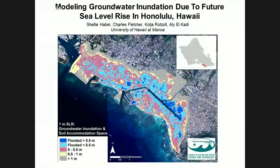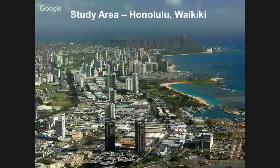Now for something a little bit different. Today I'm going to be talking about our hydrologic flow model that models the narrowing of the space between the surface and groundwater as sea level rises, as well as what areas will experience groundwater inundation. Our study area is Kaka'ako and Waikiki towards Diamond Head — the economic engine of the state of Hawaii.